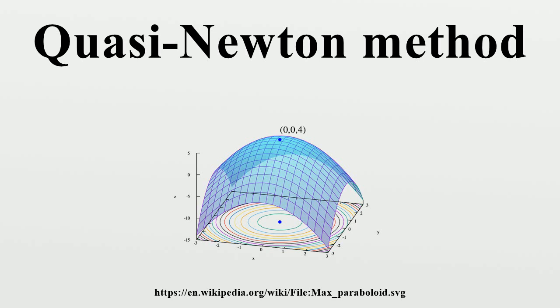One of the chief advantages of quasi-Newton methods over Newton's method is that the Hessian matrix does not need to be inverted.